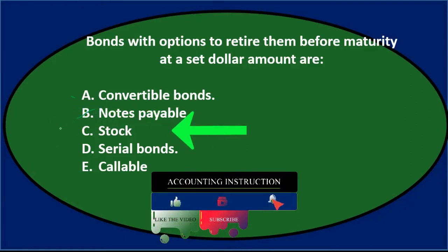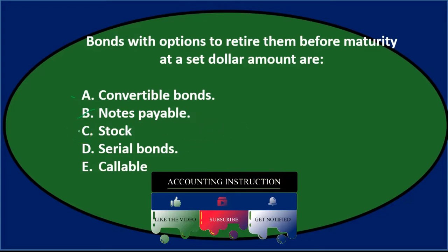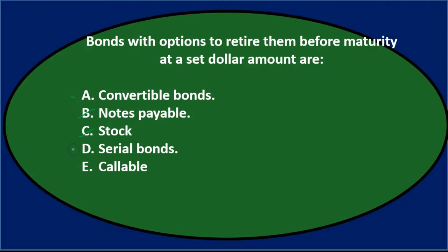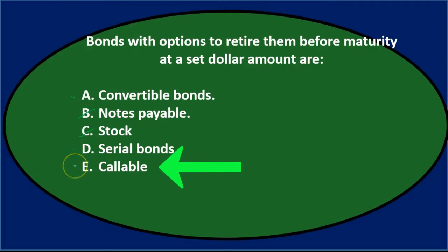C says stock — stocks and bonds go together when we talk about investments but they're not the same thing, so stock doesn't seem reasonable. D says serial bonds — if we don't really know all the different types of bonds, that could be one type, so I'll keep D. E says callable bonds — again that's possible, so we're left with A, D, and E: convertible bonds, serial bonds, and callable bonds.